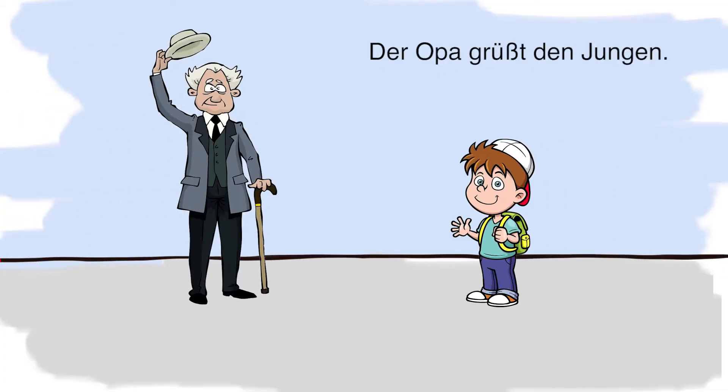Schauen wir uns dazu zunächst mal ein einfaches Beispiel aus dem Deutschen an. Zum Beispiel, der Opa grüßt den Jungen, er raucht Pfeife. In diesem Beispiel ist nicht ganz klar, worauf sich das Pronomen er bezieht. Es könnte der Opa oder der Junge sein. Durch Pfeife rauchen ist allerdings relativ klar, dass es nur der Opa sein kann.